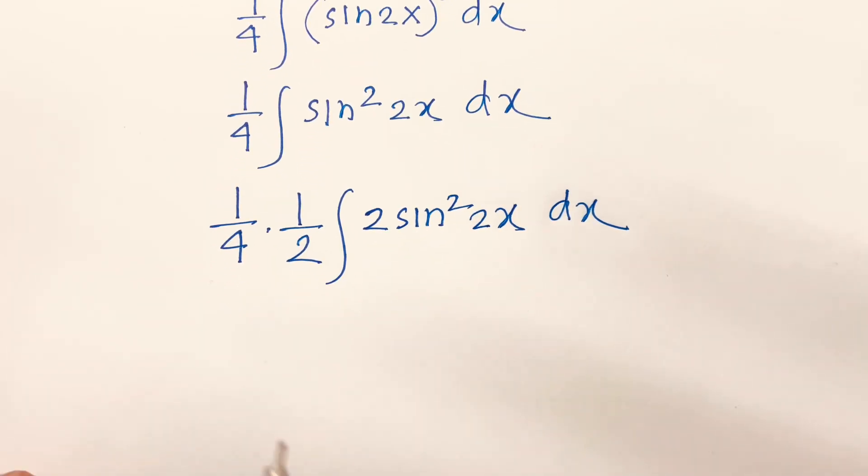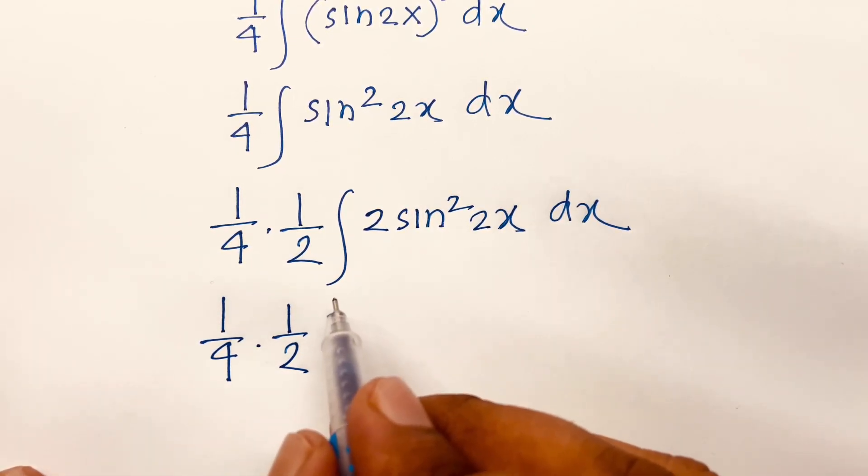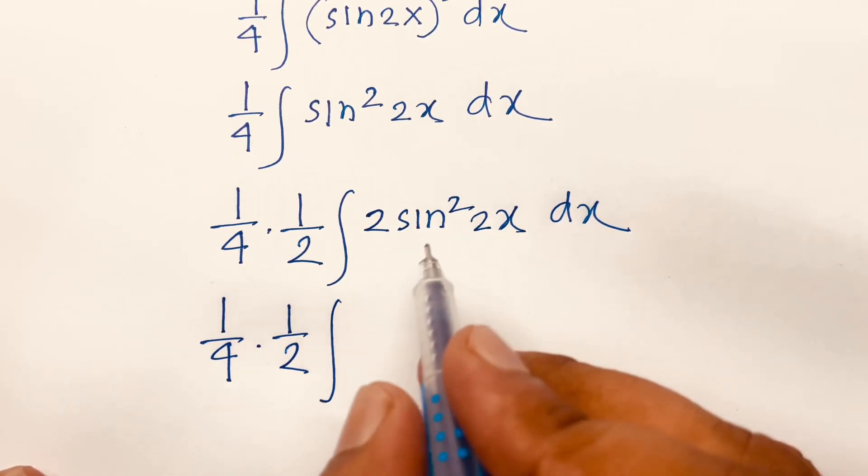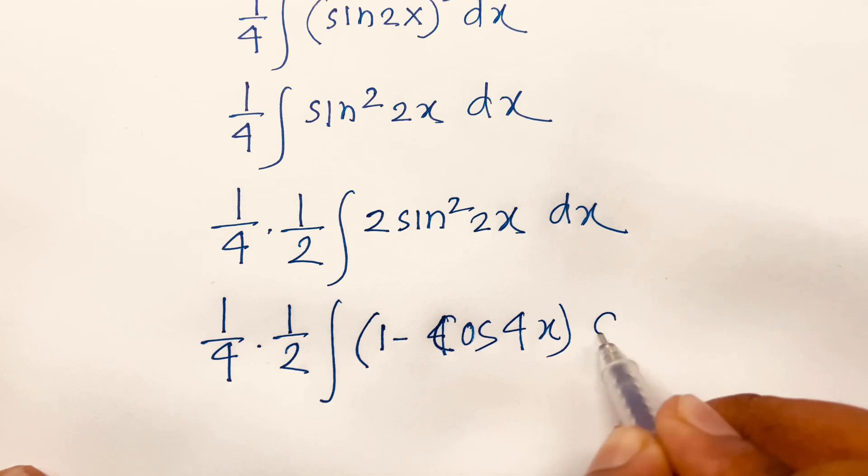Then, I can say 1 over 4 times 1 over 2, you know that integral of 2 sine square 2x is 1 minus cos 4x dx.